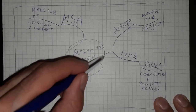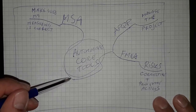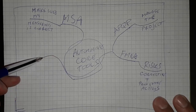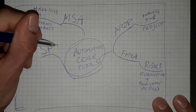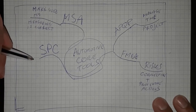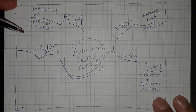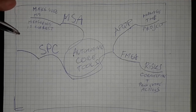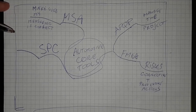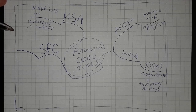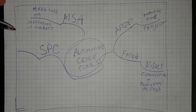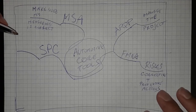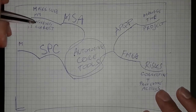The next automotive core tool is about the process — SPC, Statistical Process Control. This is to make sure that if I produce something, I produce it in the correct way and I can control it. If I have mass production and I want to produce 1,000 parts per day, I need to make sure all 1,000 parts are within specifications so that I can sell them to the customer.